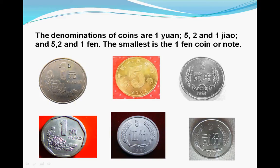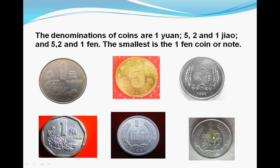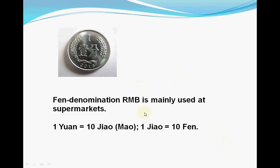Let's see these coins. This is the 1 yuan — you can say yī yuán or yī kuài. This is the 5 jiao — you can say wǔ jiǎo or wǔ máo. This is the 2 jiao — you can say liǎng jiǎo or liǎng máo. This is the 1 jiao — you can say yī jiǎo or yī máo. This is the 5 fen — you can say wǔ fēn. This is the 2 fen — you can say liǎng fēn. This is the 1 fen — you can say yī fēn qián. One fen money.